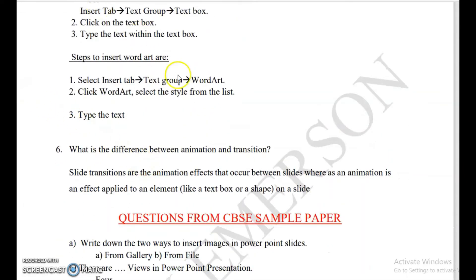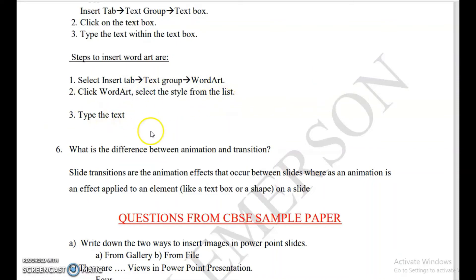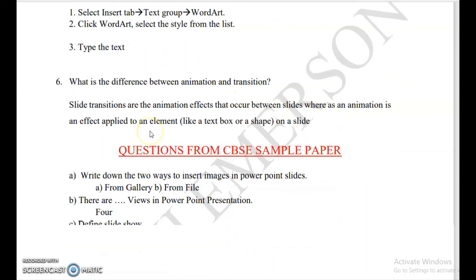How do you insert Word Art? Select the Insert tab, then go to the Text group, then click Word Art. Click on the Word Art style, select the style from the list, and then type your text.